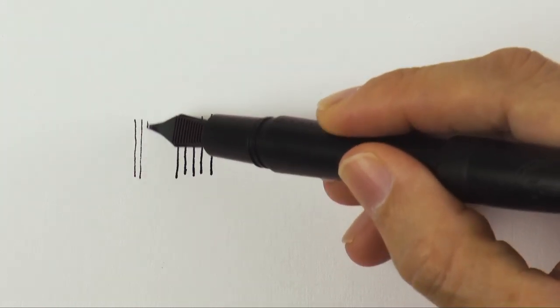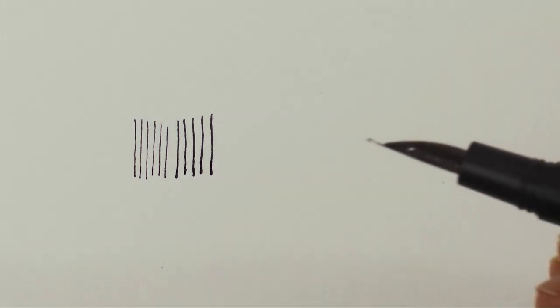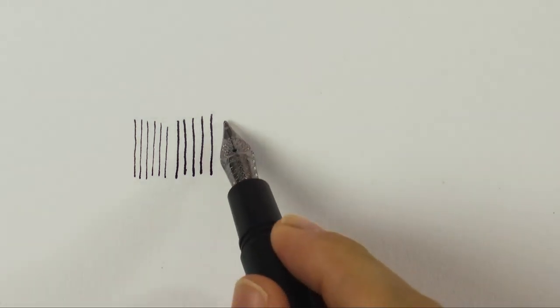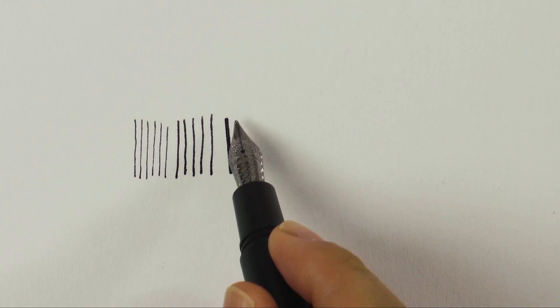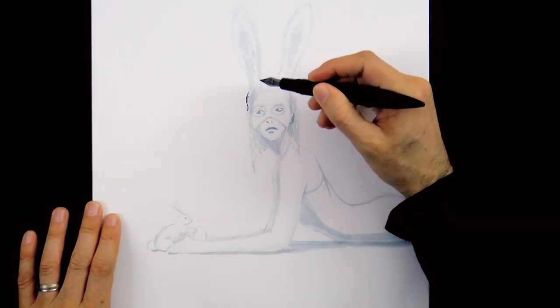If we flip it around, it makes really thin lines. And if we hold it like that and apply some pressure, we get wide marks. So we have a full range of possibilities.